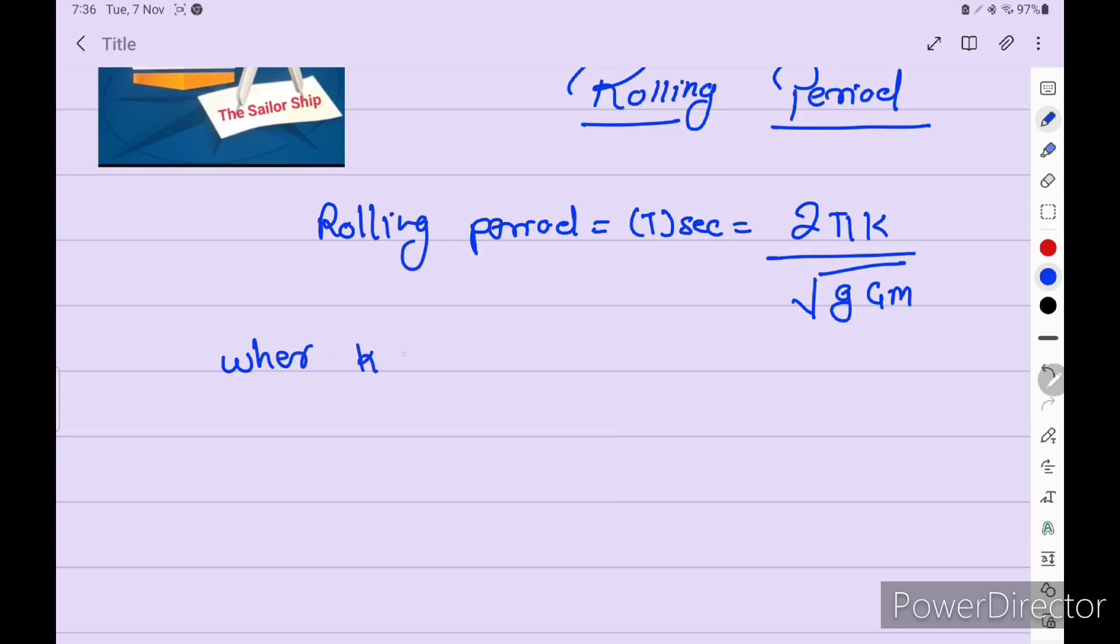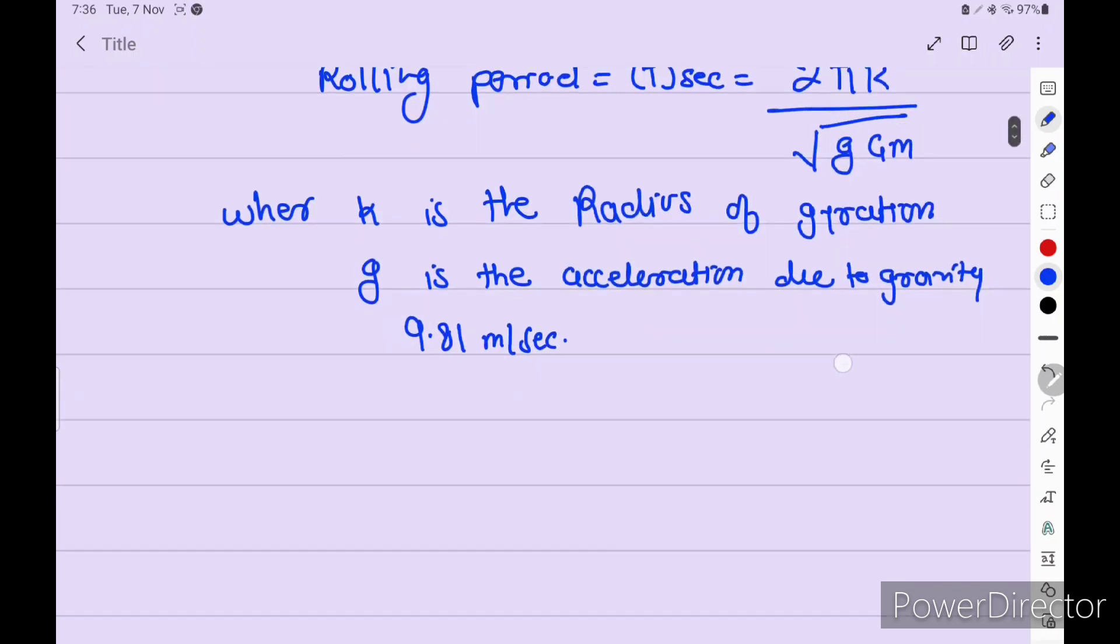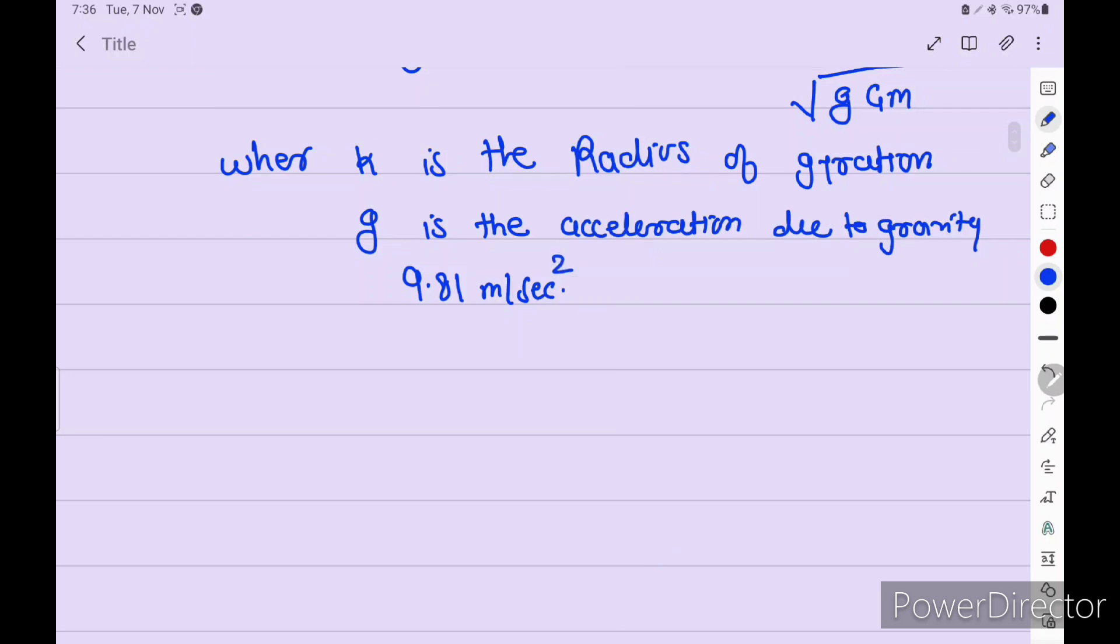Where k is the radius of gyration, small g is the acceleration due to gravity with a fixed value of 9.81 meters per second squared, and GM is metacentric height.